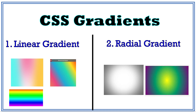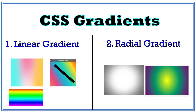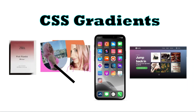Linear means a straight line. We can create gradient in a horizontal line or a vertical line, and we can also rotate the gradient concept.